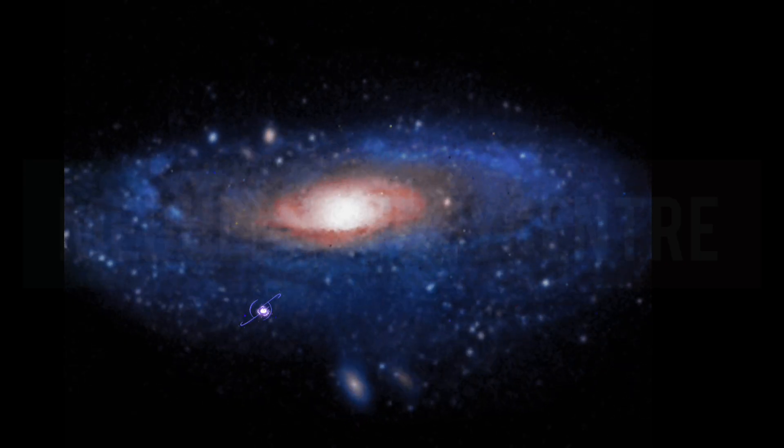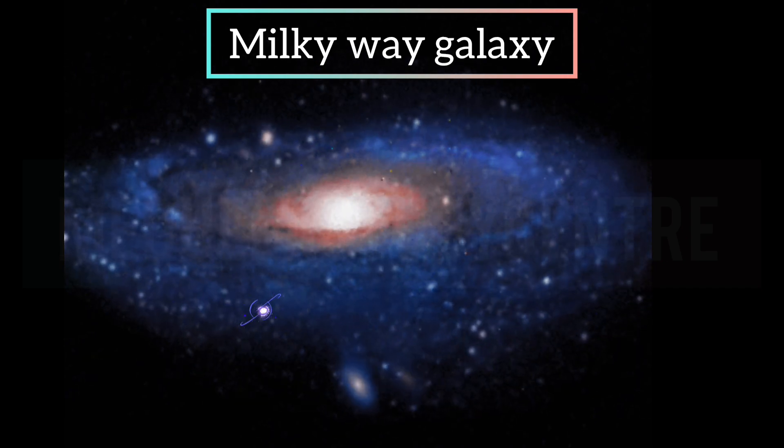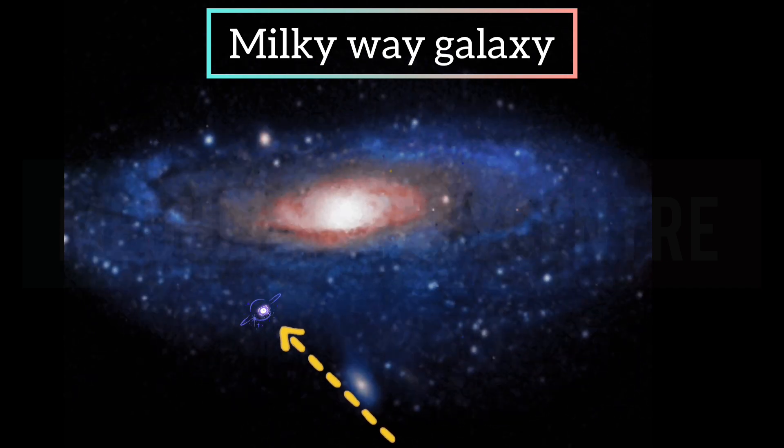Can you see this picture here? Do you know what this is? This is our Milky Way galaxy. Do you see this bright light? This bright light is our solar system where we live. Let's know more about our solar system.